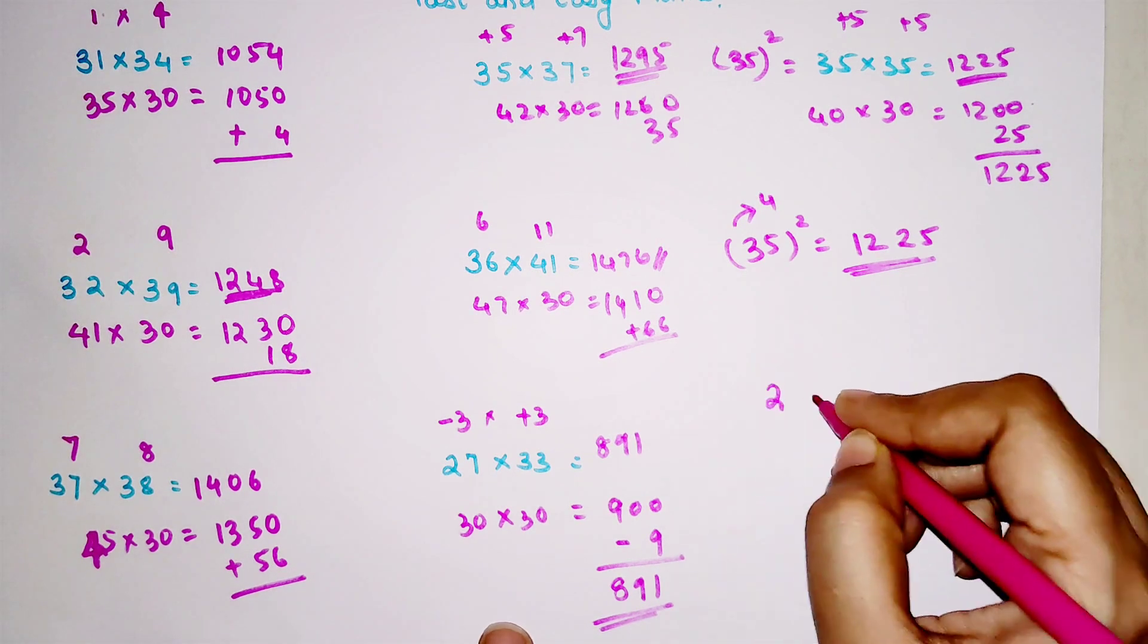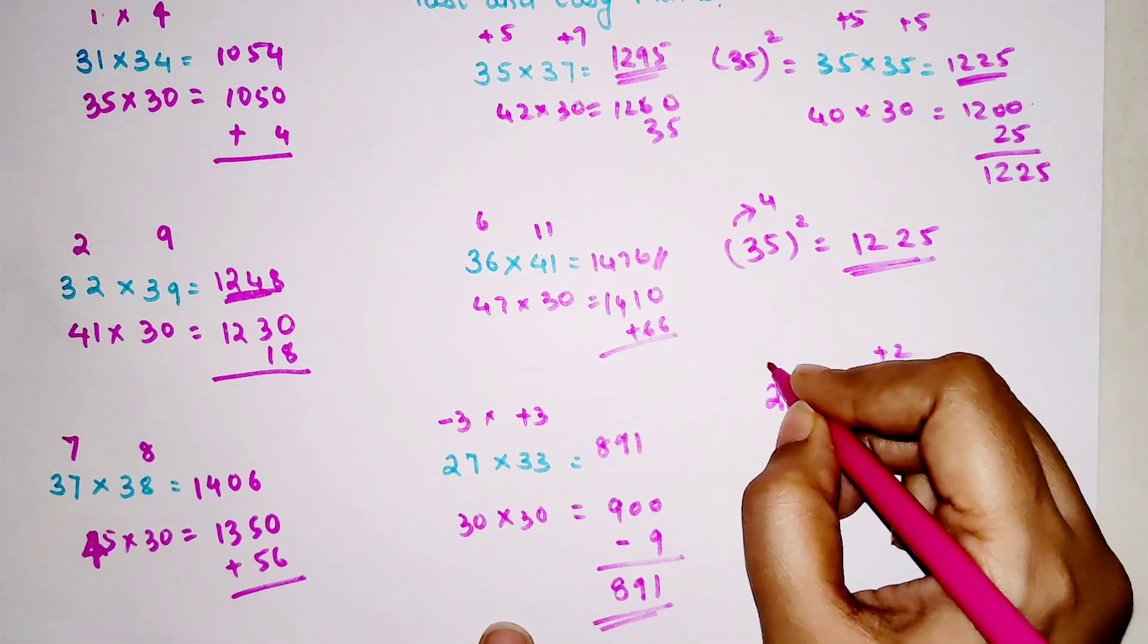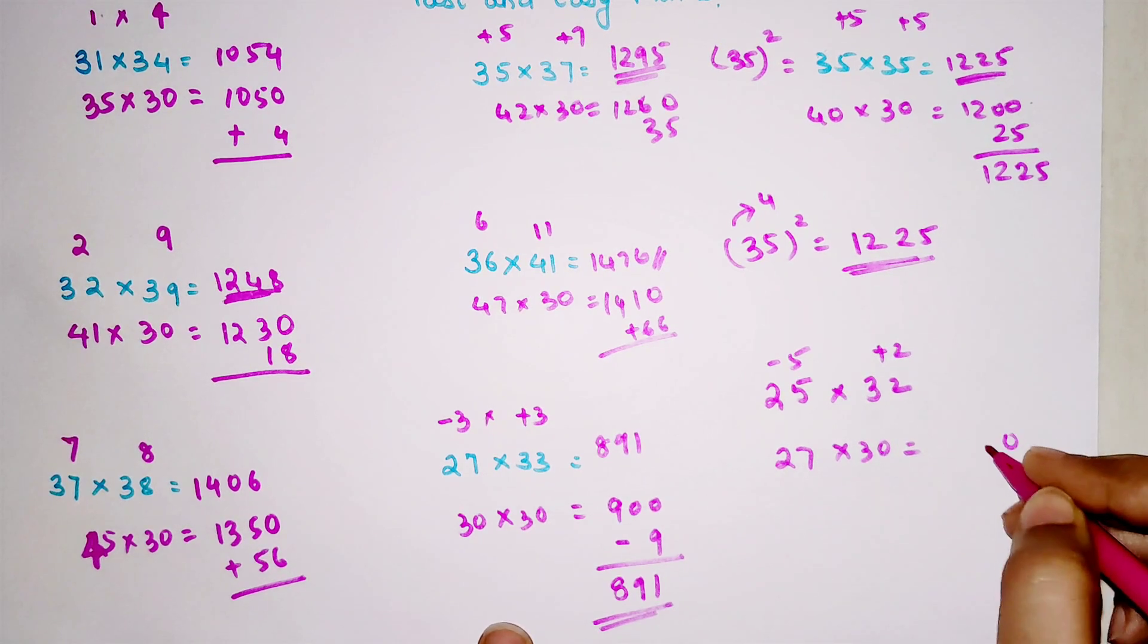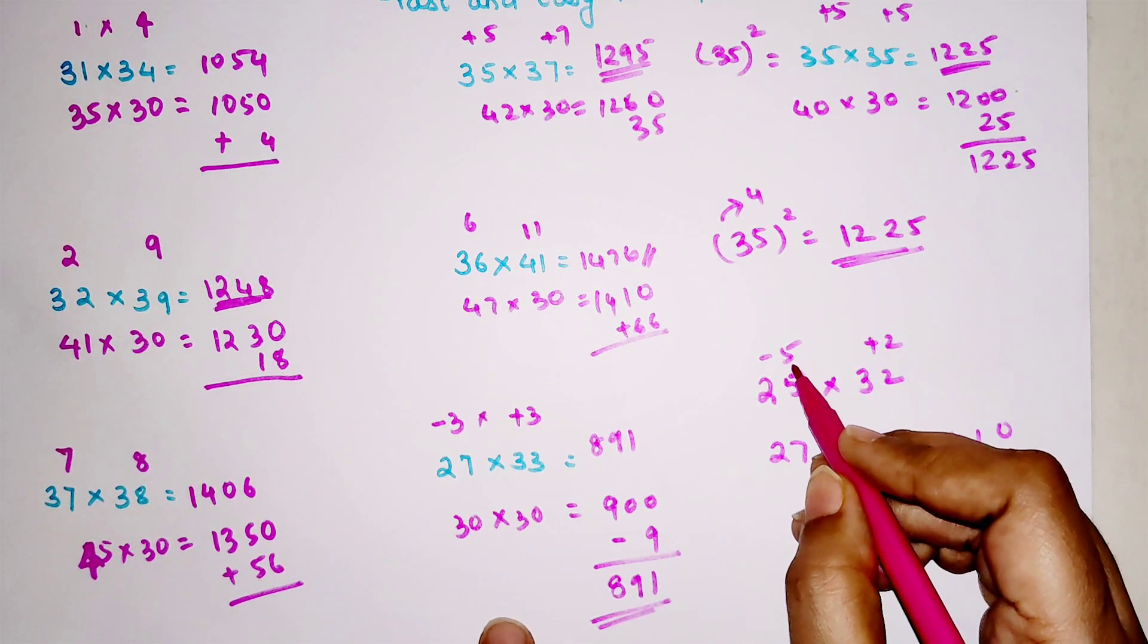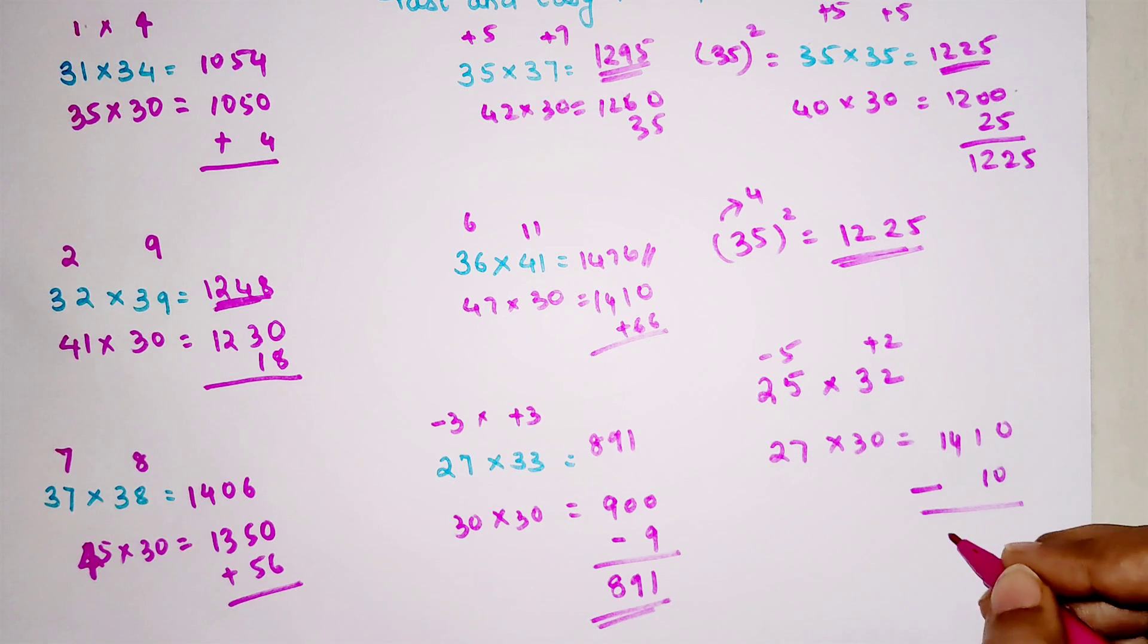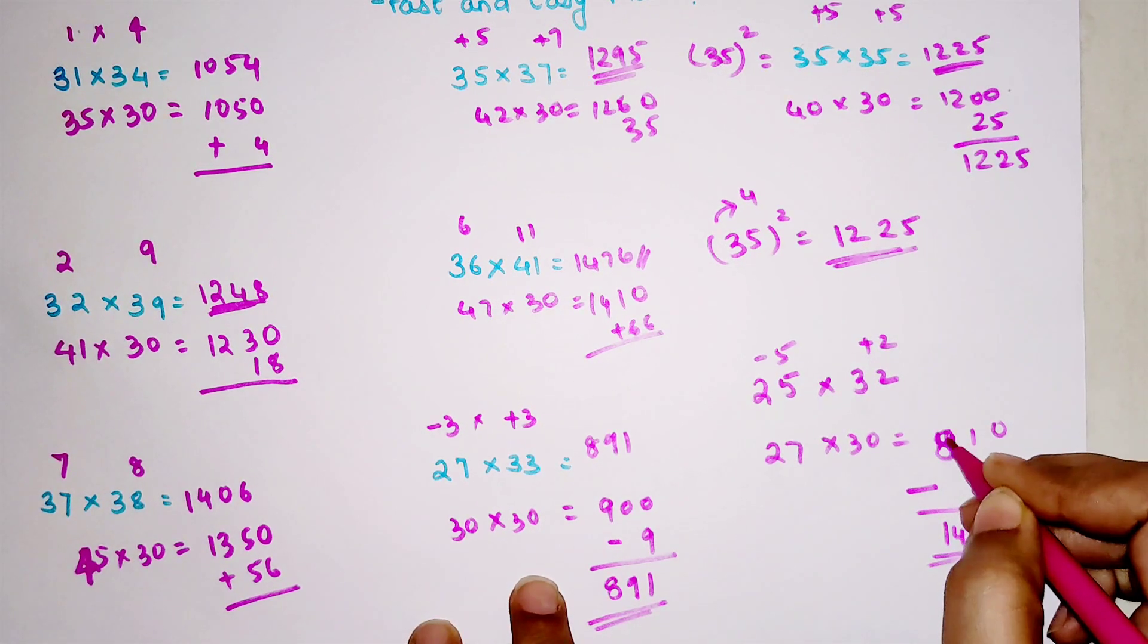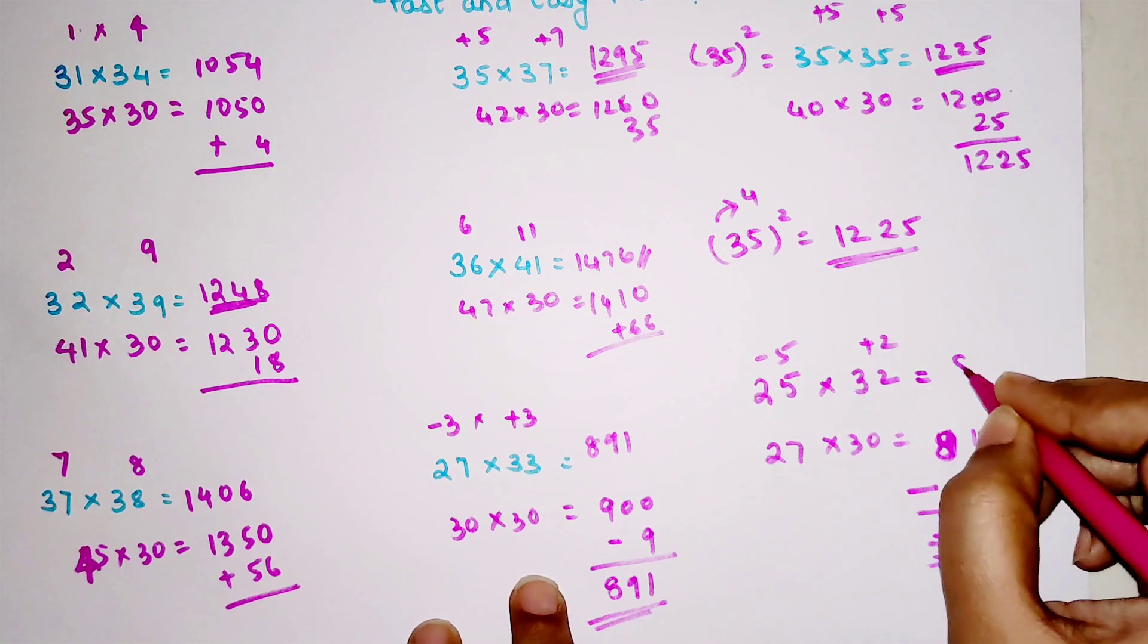Now let's do 25 into 32. This is plus 2, this is minus 5. So we have 27 into 30. Your answer is 810. And now you will subtract the product of this. Why subtraction? Because one sign is negative. So minus 5 into 2, that gets you minus 10. So the answer is 800. When you subtract 10 from 810, your final answer becomes 800.